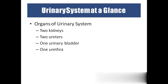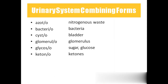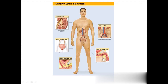The organs of the urinary system are: two kidneys, two ureters, one urinary bladder, and one urethra. We have a pair of kidneys located retroperitoneally. The right kidney is a bit lower than the left kidney because on the right side we have the liver, which pushes the right kidney downwards. Above the kidney we have the adrenal glands. The region called the hilum is where the renal artery enters and the renal vein and ureter exit.